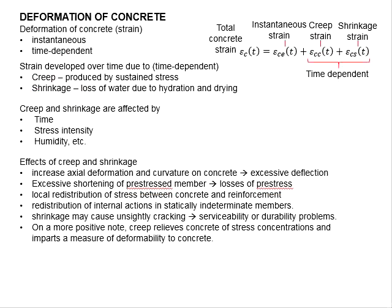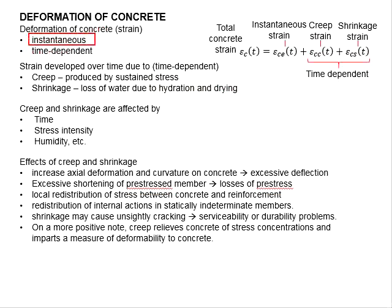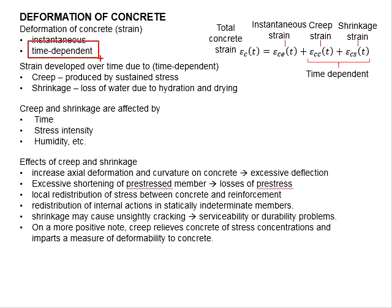Shrinkage is mainly associated with loss of water due to dehydration and the drying process of the concrete. In comparison, the instantaneous strain develops faster and at a more significant rate, while the time-dependent strain develops slower over time.